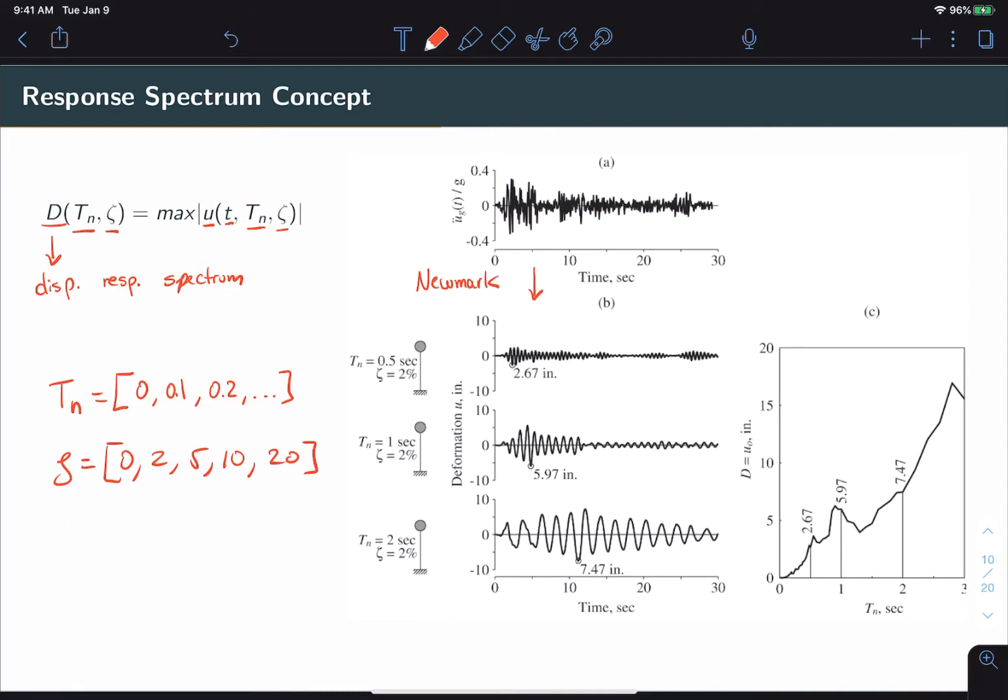Now going back to the simulated responses, for each time history response, we will take simply the maximum absolute value, which is shown by the circle. And then we will plot that value at the corresponding value for the period. So 2.67 goes at 0.5, 5.97 goes at a period of 1, and 7.47 is plotted for a period of 2. And obviously we simulate more cases to fill in the spaces in between.